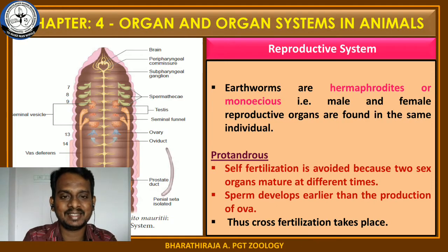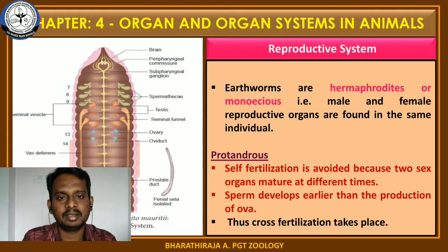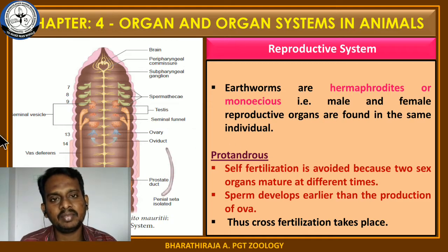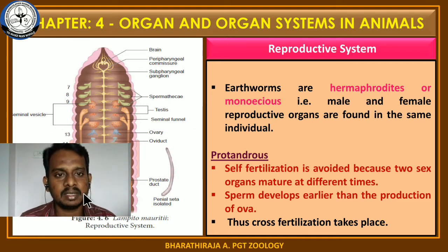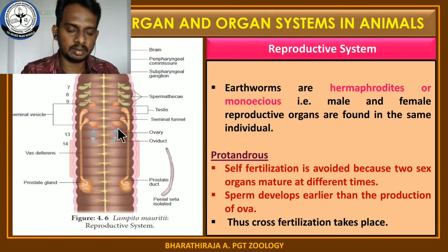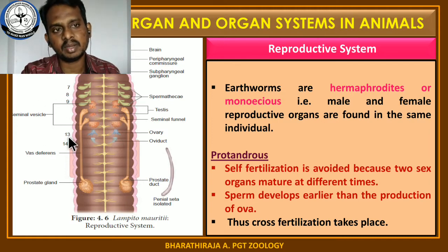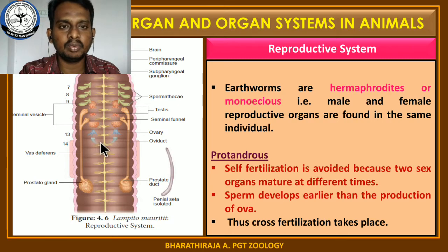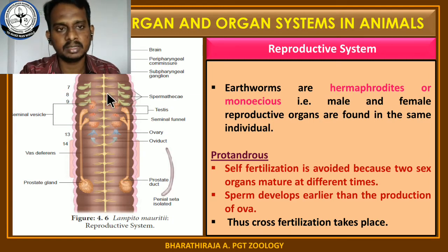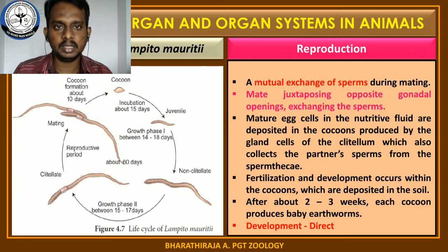Welcome back, dear students. This is the last session on Earthworm. Last class we completed the reproductive system of Earthworm. We discussed about male and female reproductive systems. In the male reproductive system, we discussed about testis, seminal funnel, seminal vesicle, vasa deferens, and penial setae. In the female reproductive system, we discussed about a pair of ovaries, ovarian funnel, and oviduct. Finally, we discussed about Spermathecae and their significance. In this class, I am going to teach about the reproduction and the life cycle of Earthworm.